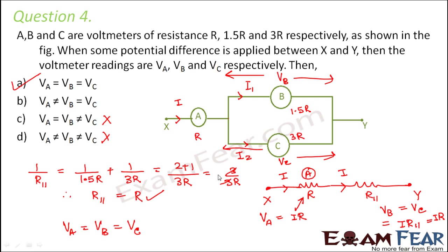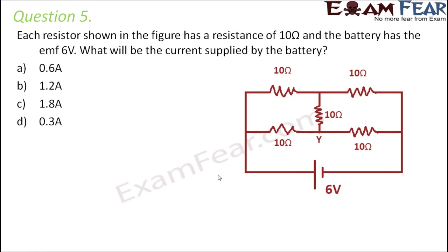I would prefer you to solve the numericals in detail so that you get more comfortable with the concepts. Now let's move on to question number 5. Each resistor shown in the figure has a resistance of 10 ohms and the battery has an EMF of 6 volts. What will be the current supplied by the battery? When you know the potential difference across the circuit, which is 6 volts, you need to calculate the equivalent resistance of the circuit.